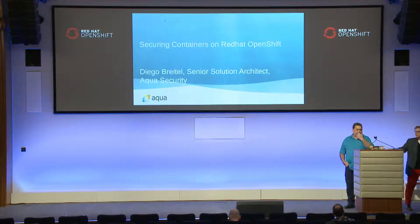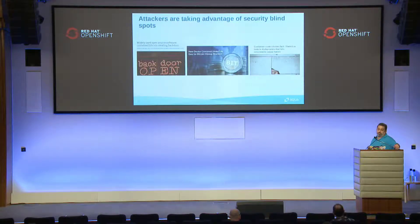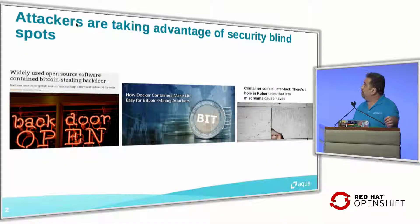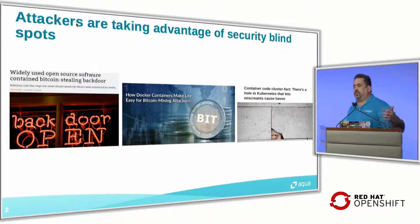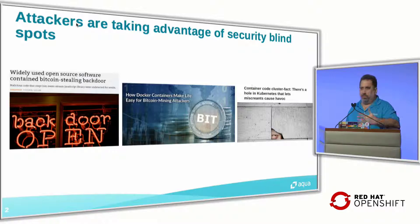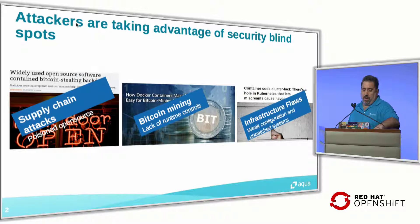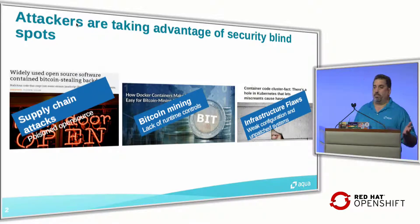My name is Diego, I'm from Aqua. Let's talk about security because it's going to matter to you a lot. Poisonous images, poisonous workloads, and rogue containers are starting to become more and more common. You have the Tesla breach and additional vulnerabilities that are found every day. OpenShift and containers basically introduce a new set of problems, and there are not enough tools to manage them out of the box.